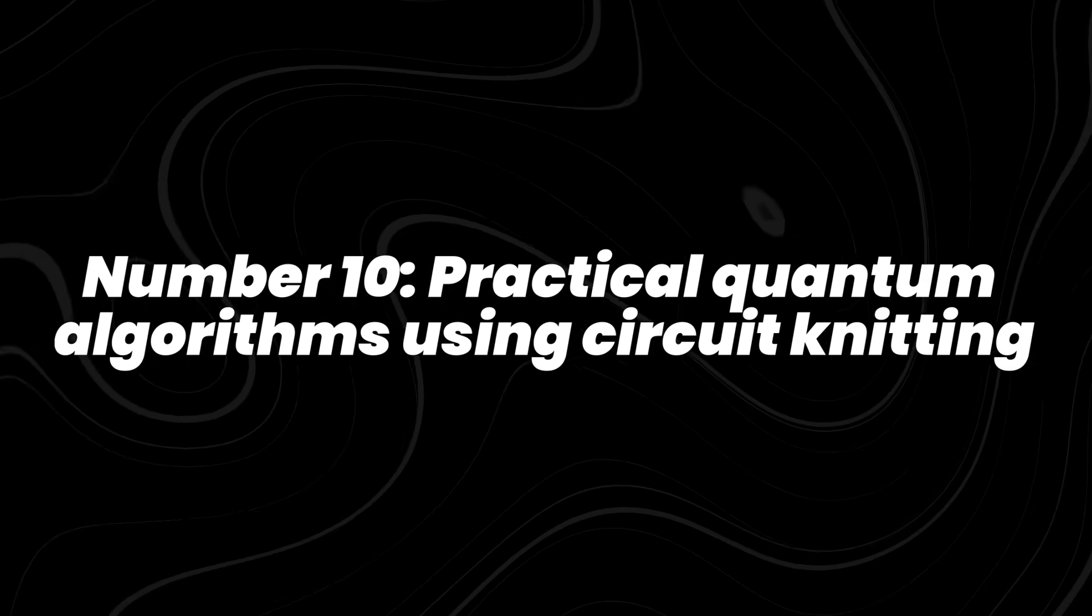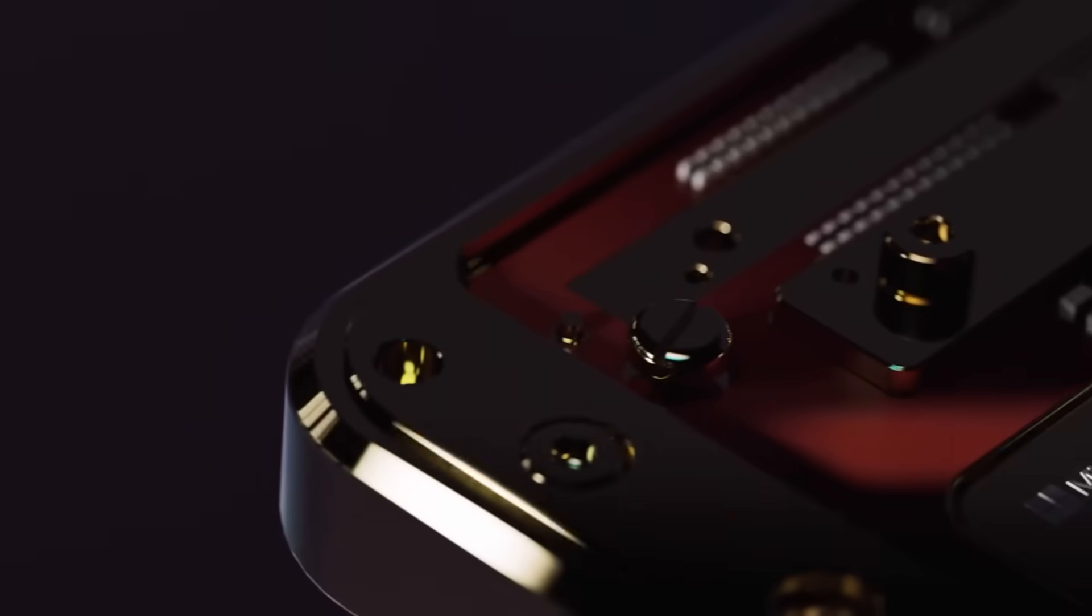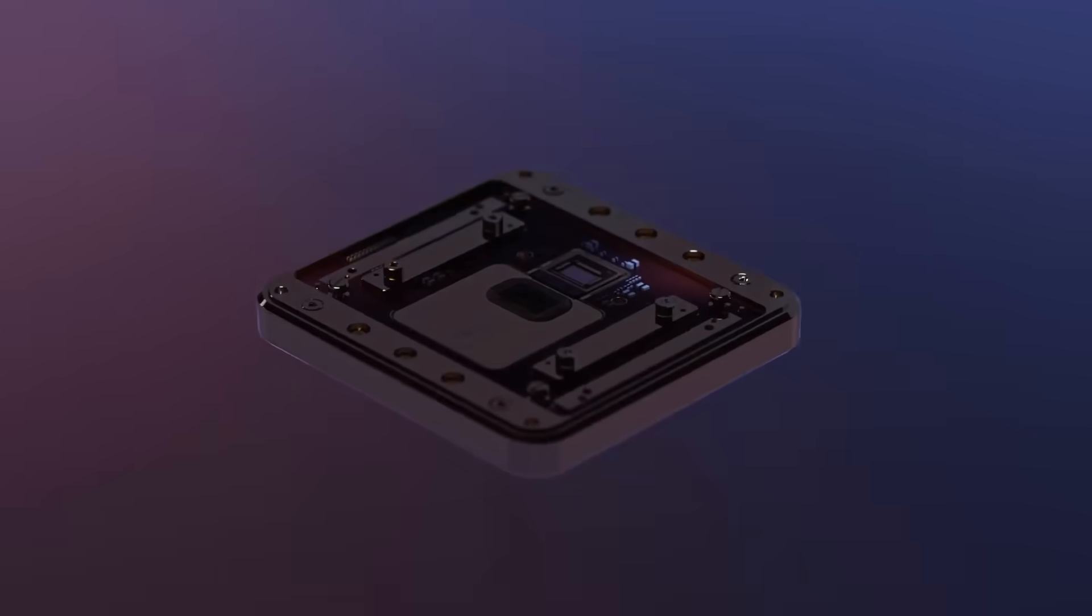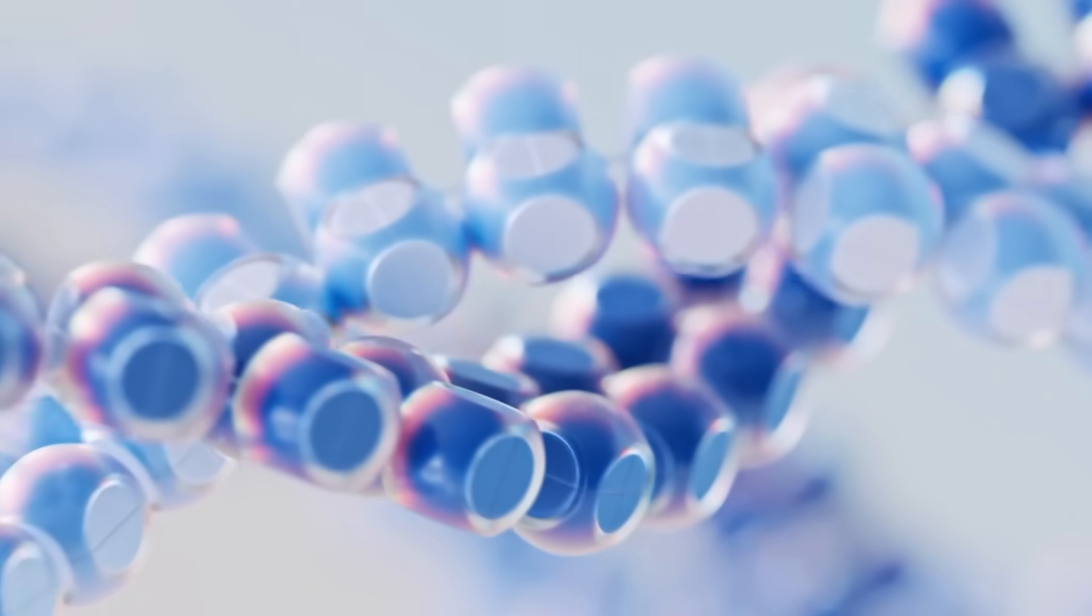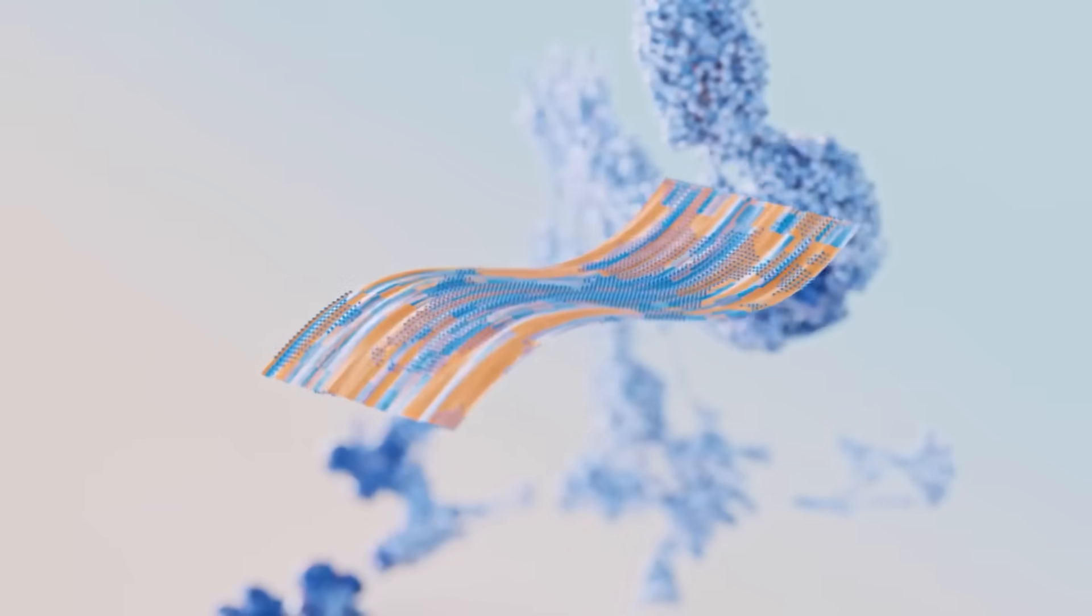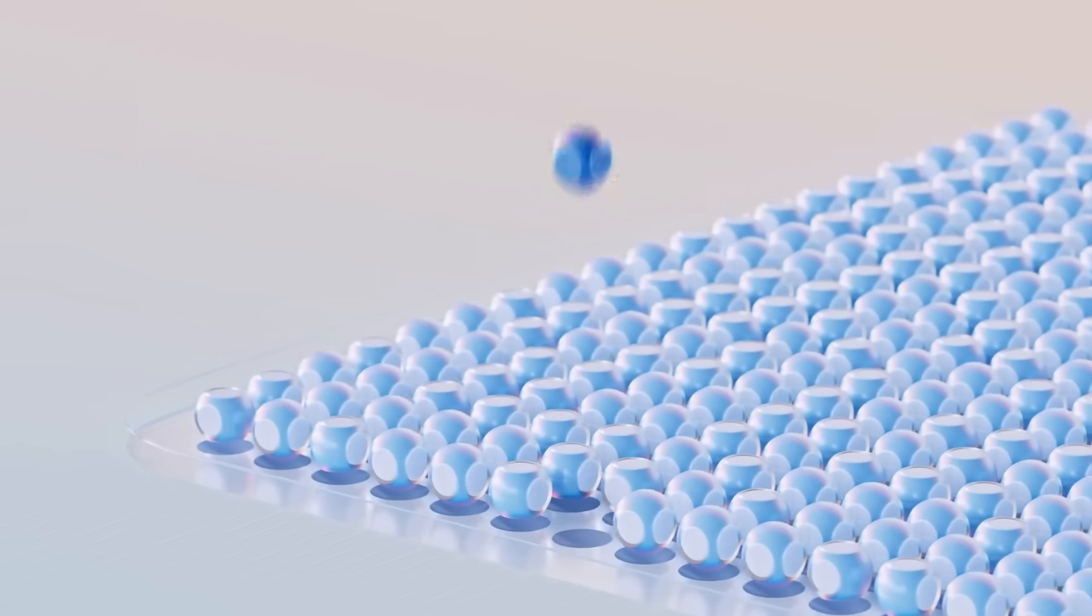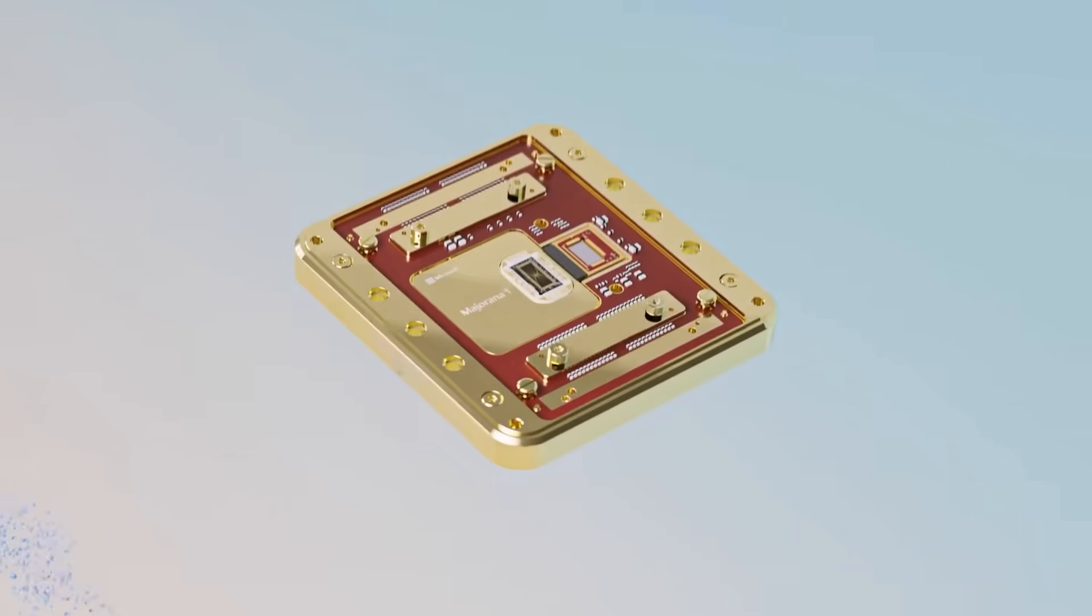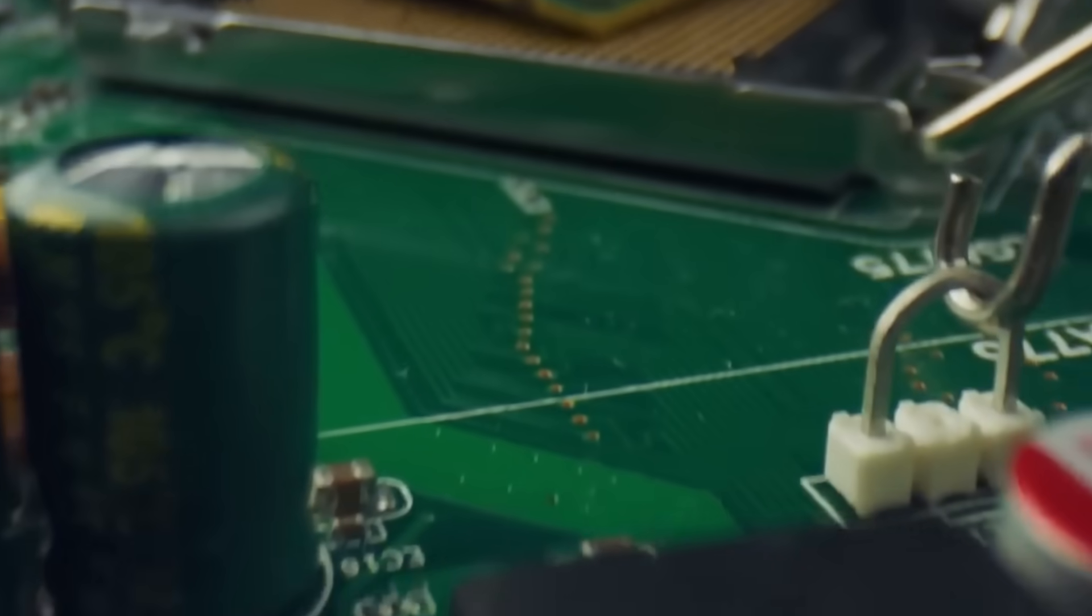Number 10. Practical quantum algorithms using circuit knitting. Quantum chips today are powerful, but they're not huge. Most processors only have around 50 to 100 qubits, which is not enough for the extremely large circuits used in advanced chemistry or optimization problems. Instead of waiting for 1,000 qubit machines, researchers started using something called circuit knitting. It sounds technical, but the idea is simple.